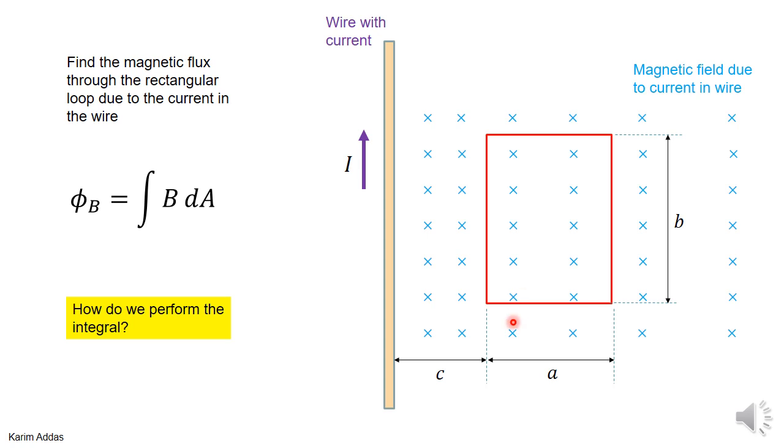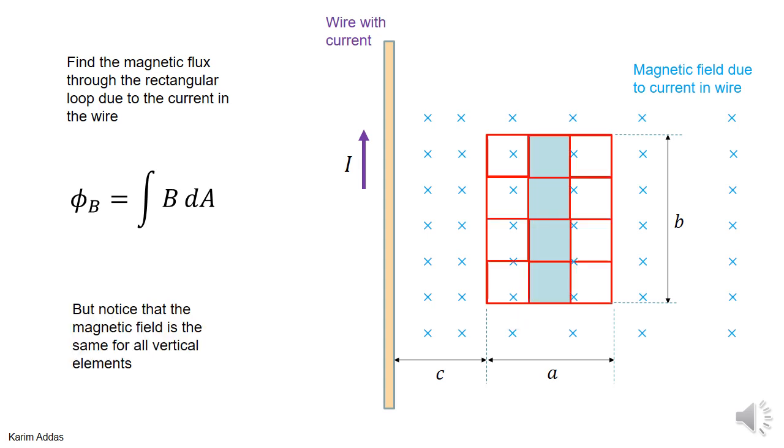Now, the question is, how can we perform this integral? Well, remember what this integration does. The integration gets B over here and then it multiplies by this area, then it gets B over here and it multiplies by this area, then it gets B over here and it multiplies by this area, then it gets B over here and it multiplies by this area.